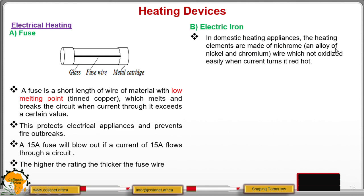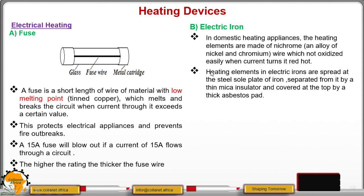And this wire is not oxidized easily when the current turns it red hot. So, that is why we are using the nichrome wire. Because it is not oxidized easily. And I'm saying all the heating devices, all the domestic heating appliances, they have the heating element.